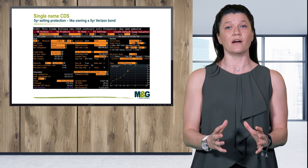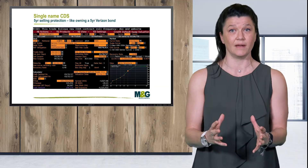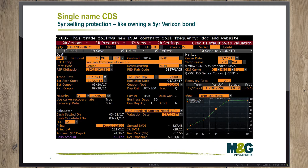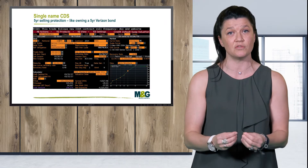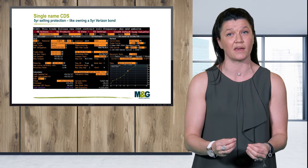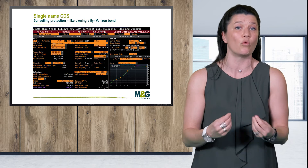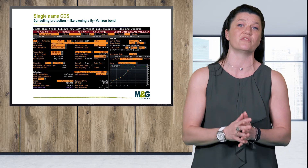Looking at our example, we see Verizon. If I want to gain exposure to Verizon bonds, I can either go and purchase the bonds or I can sell CDS on the company. We see on the slide the premium received would be 73 basis points per year for five years. If the company improves and this premium reduces in the market, we are effectively gaining more than the current price, hence profiting.